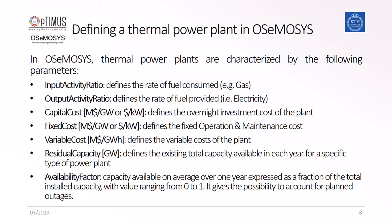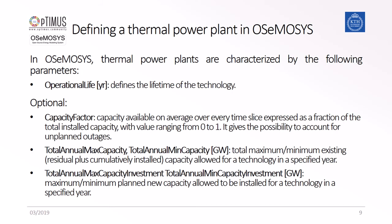The operational life is the amount of years that the power plant is operational. An optional parameter is the capacity factor, which is the share of actual electrical energy output over a given period of time to the maximum possible energy output over that period. OSeMOSYS will, for all electricity production, decrease the maximum energy output by the capacity factor for that given time slice.